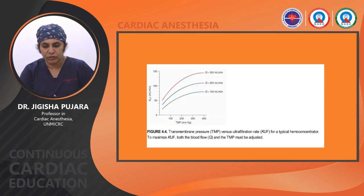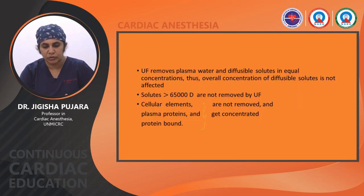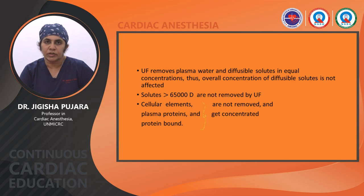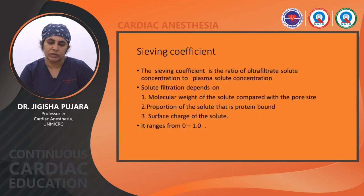Ultrafiltration removes plasma water and diffusible solutes in equal concentration; thus the overall concentration of diffusible solutes is not affected. Solutes more than 65 kDalton are not removed by ultrafiltration. Cellular elements, plasma proteins, and protein-bound substances are not removed as they are larger in size, and so they get concentrated on the blood side.